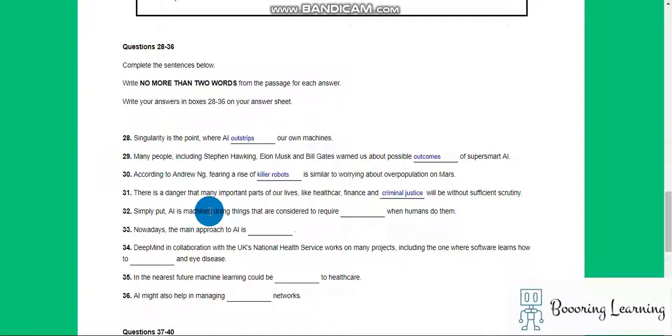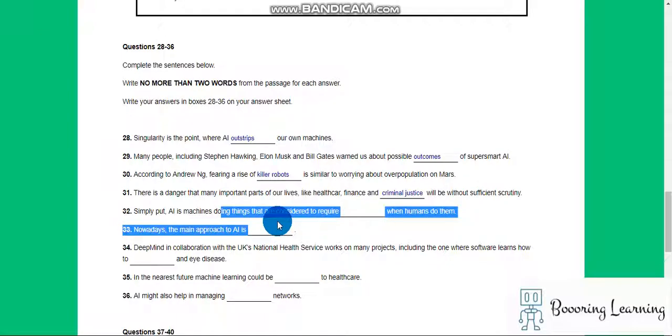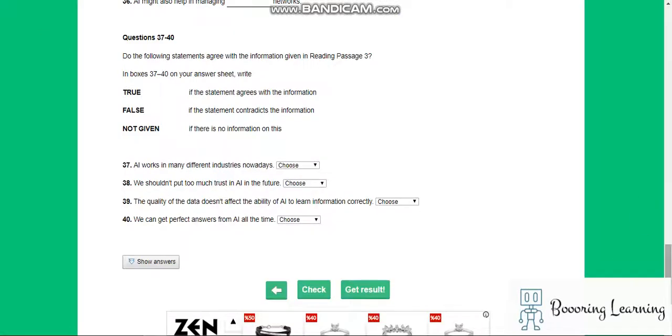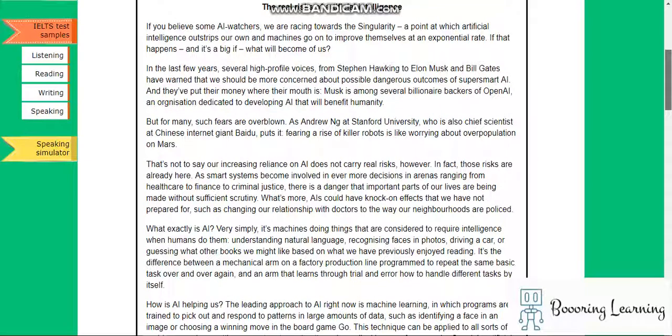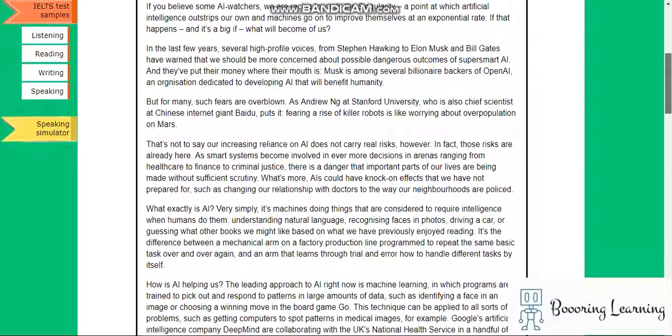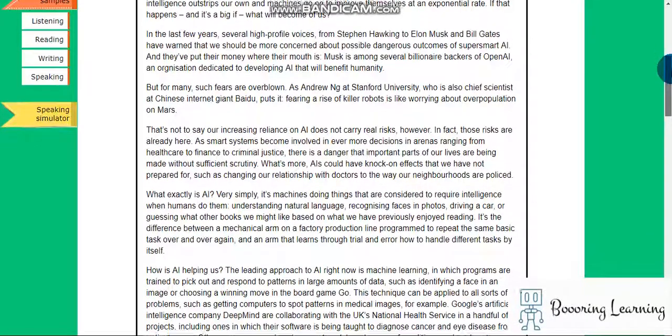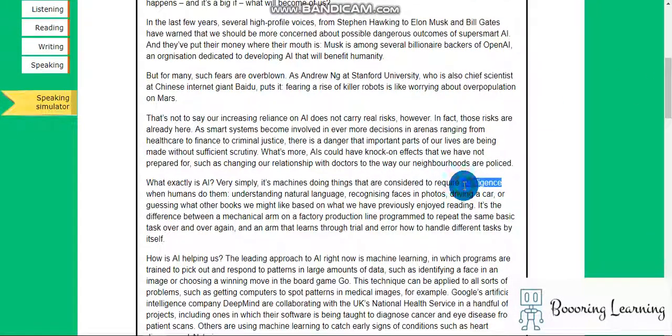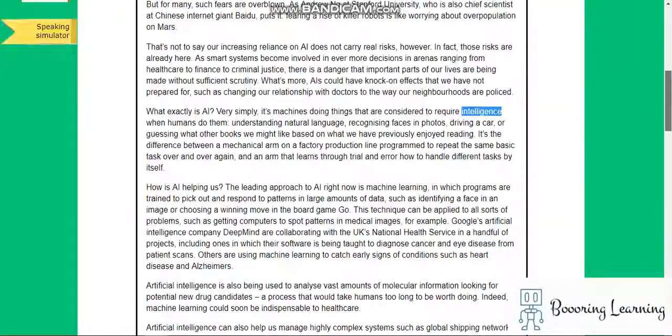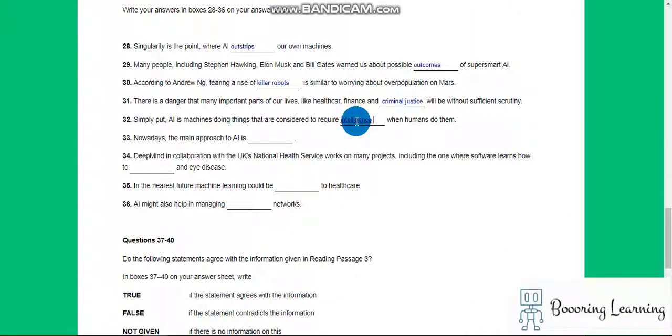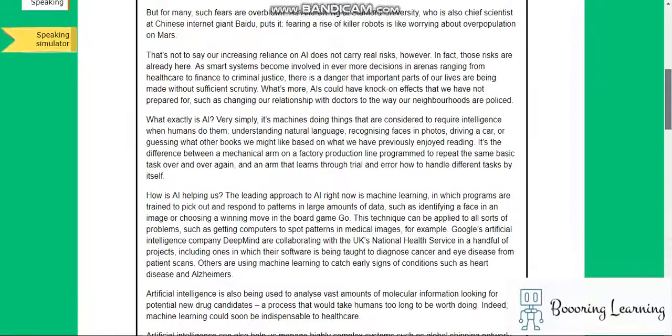Simply put, artificial intelligence is machines doing things that are considered to require... Nowadays the main approach to artificial intelligence is...